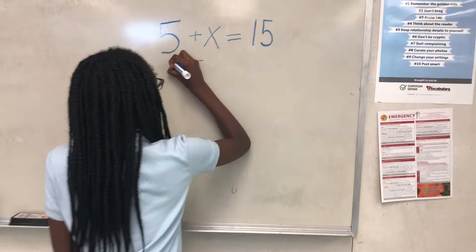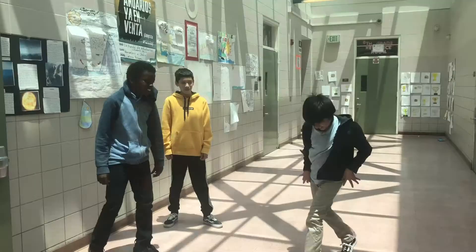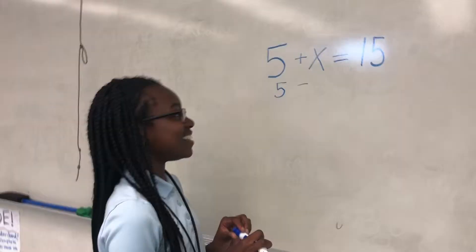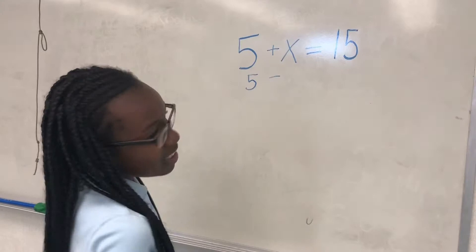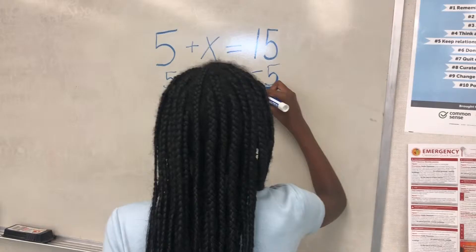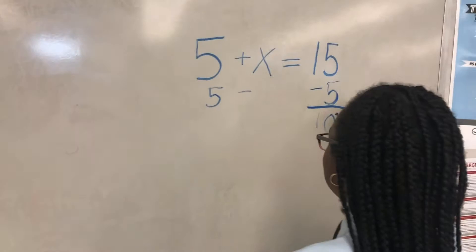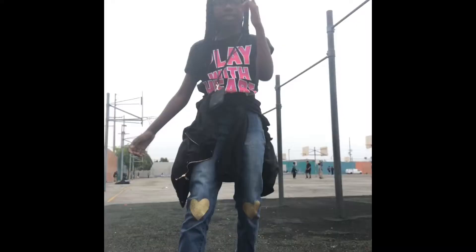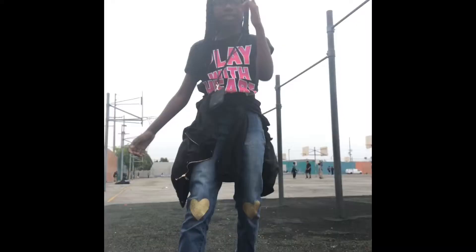Y'all know the rules — now it's negative 5. Leave the X alone, you already know. Now we go to 15, so they are not alone. Subtract 15 by 5 — this is just a rhyme. Now it's close with 10, so we don't go again. Now we're done with the problem.